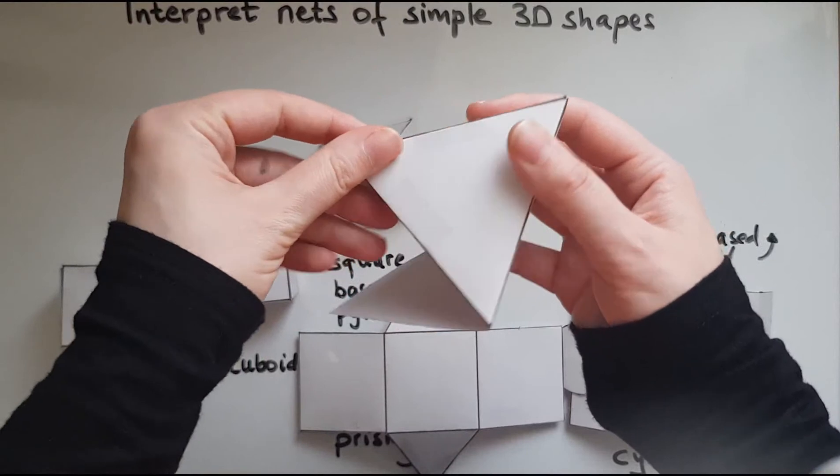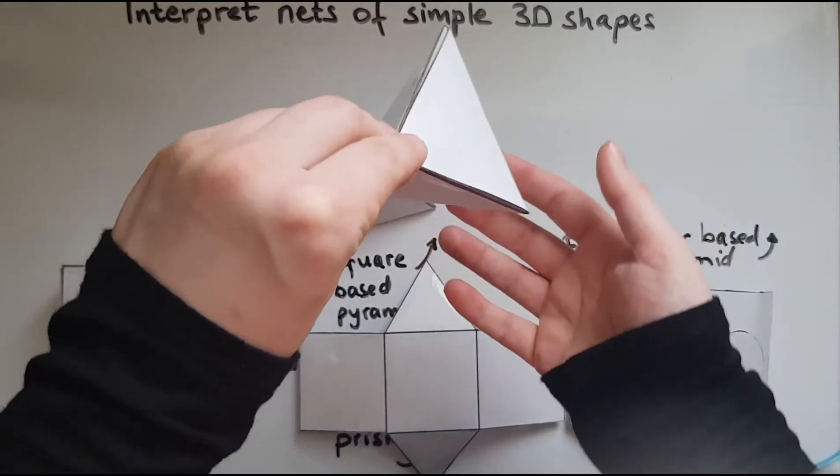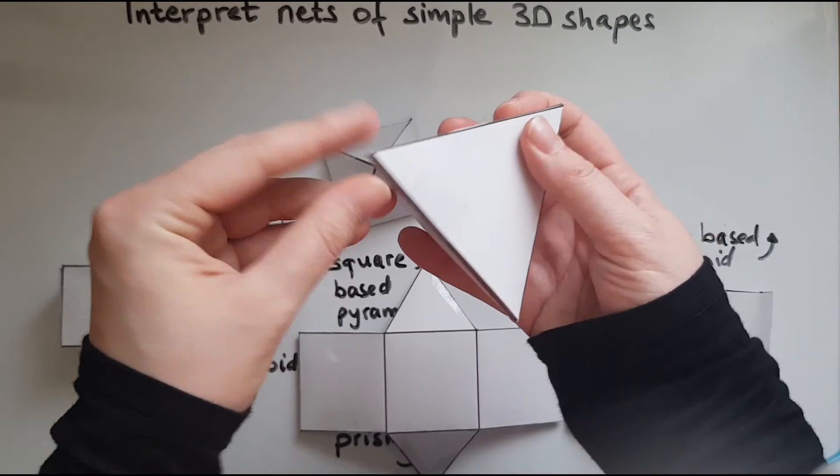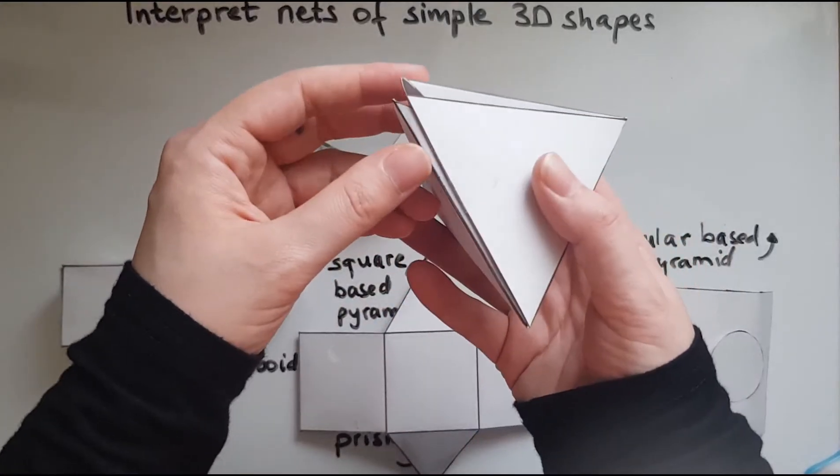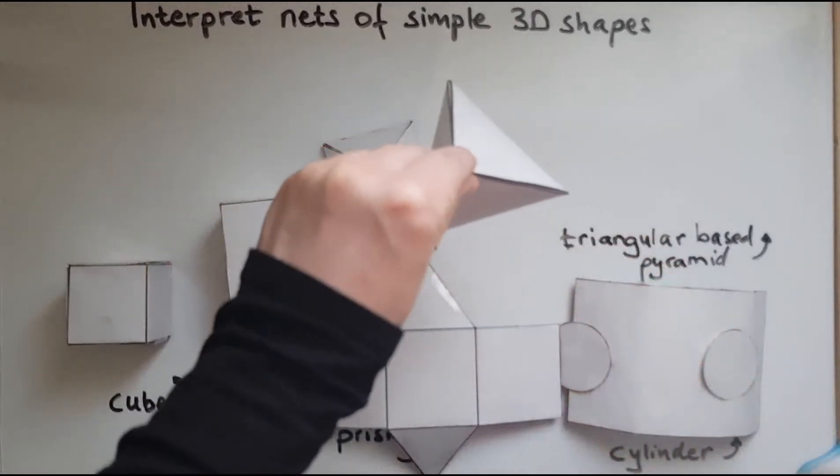So putting these together, very similar to the square-based pyramid. The only difference is that we have a triangle at the base. So putting these all together will give us the pyramid.